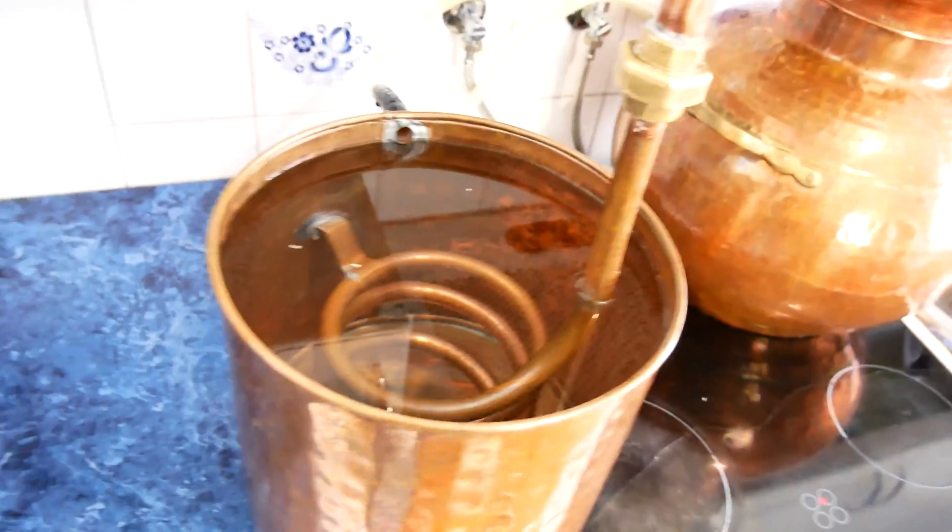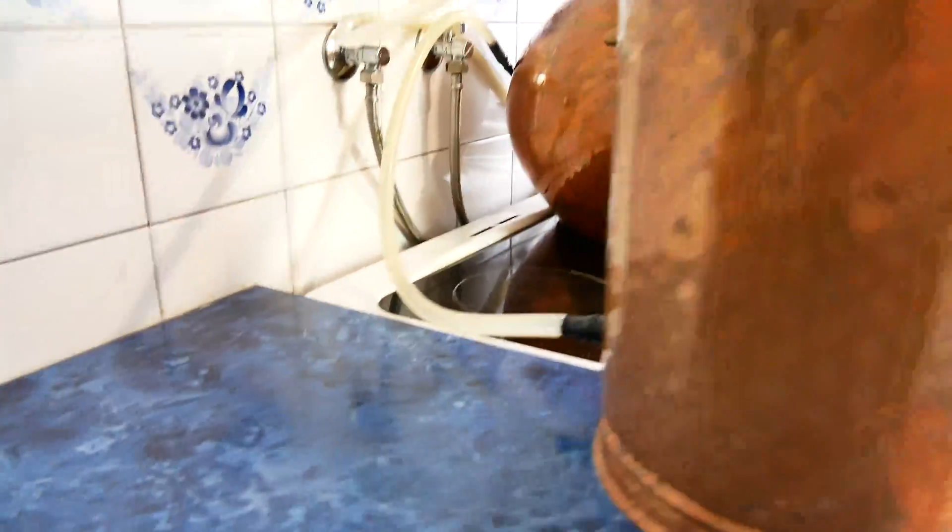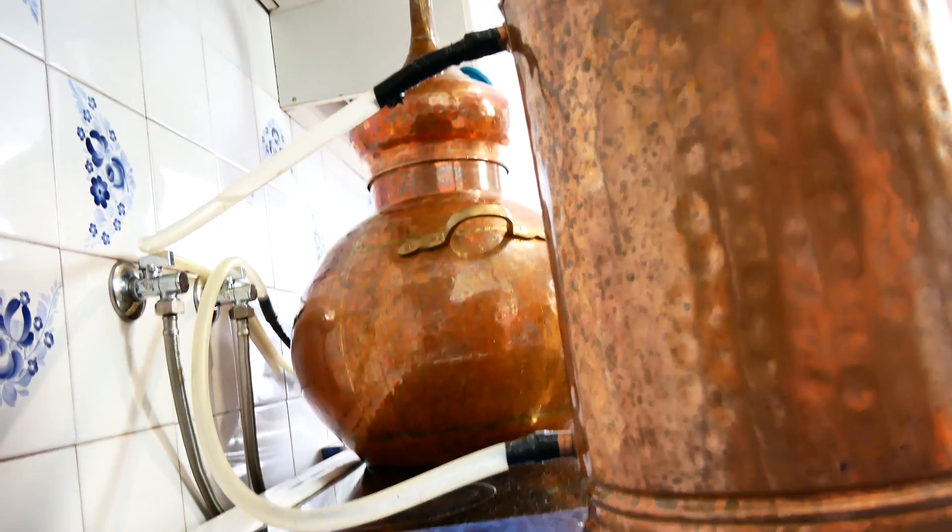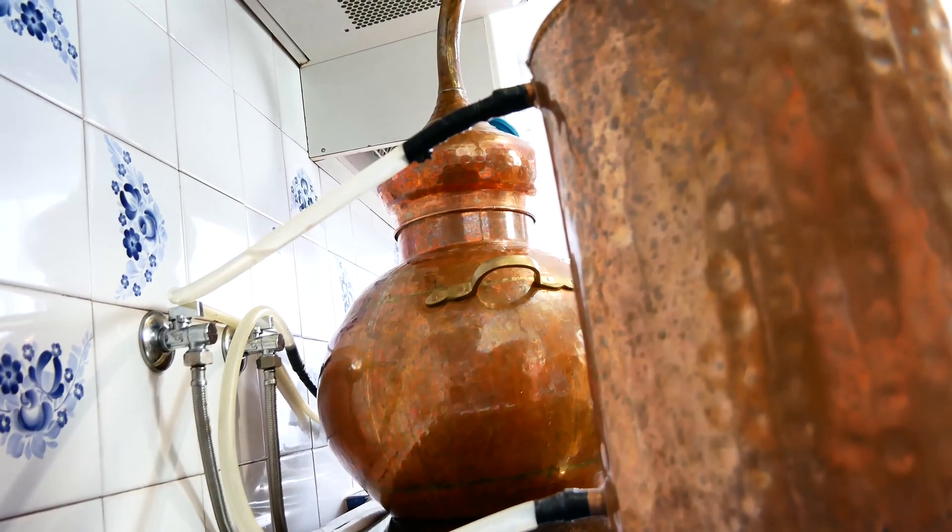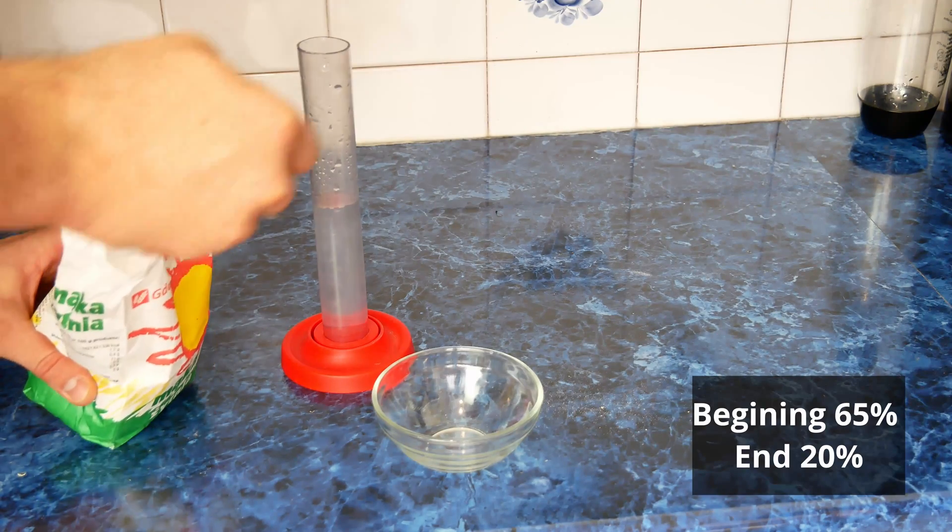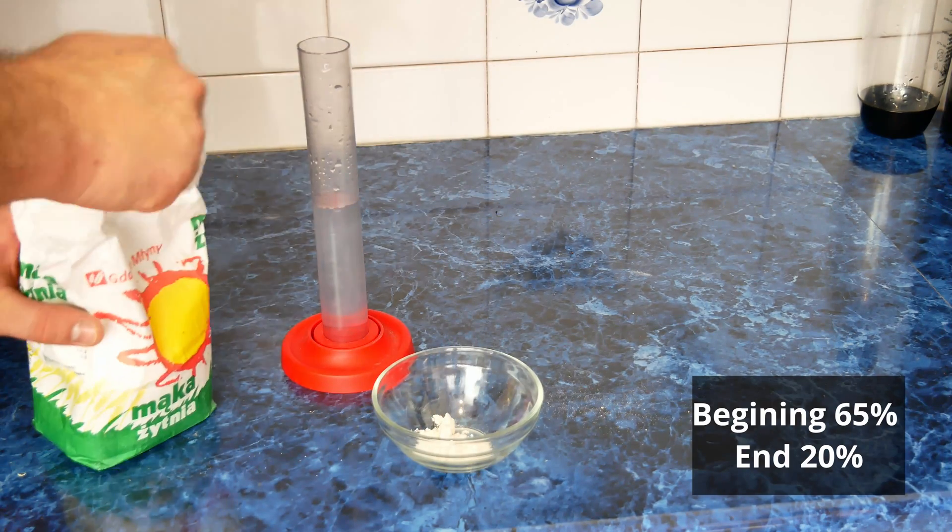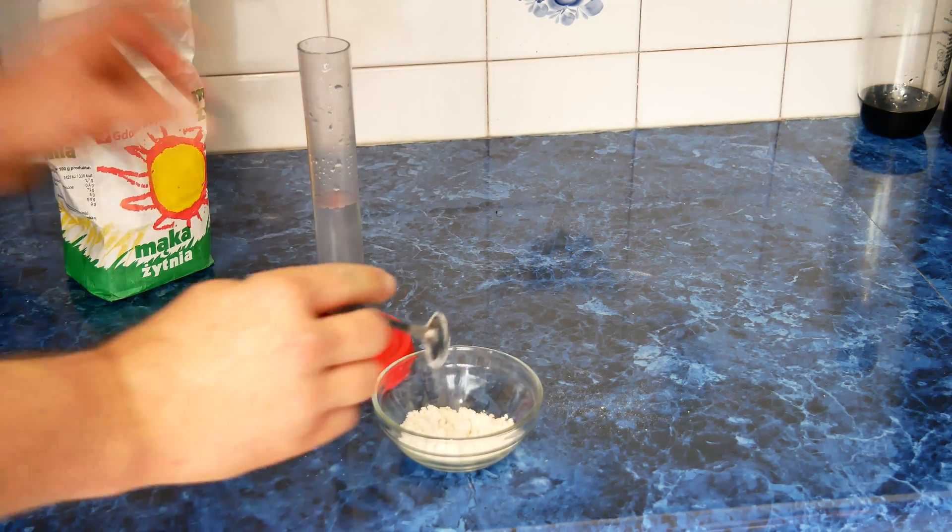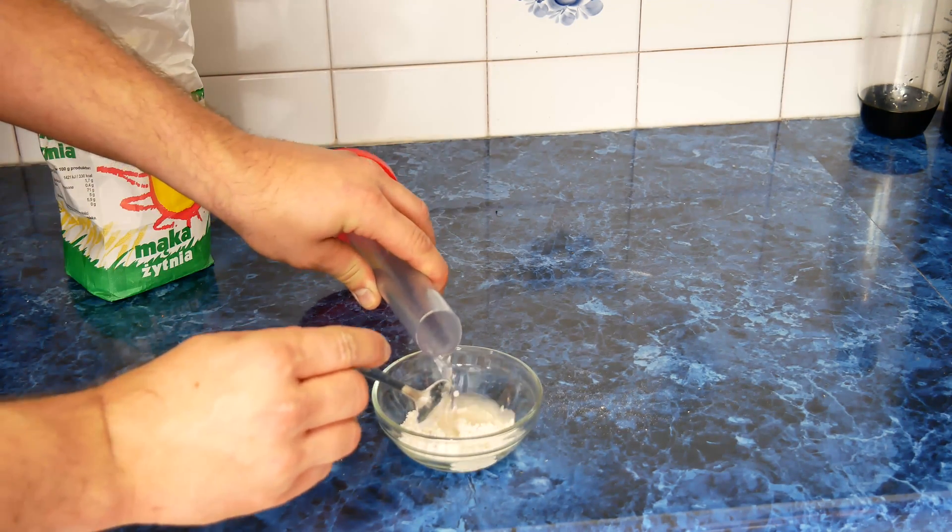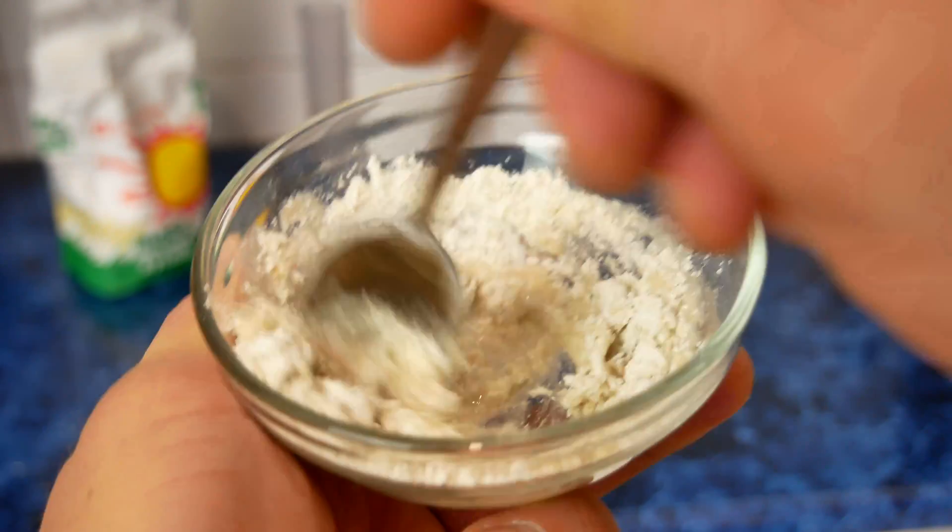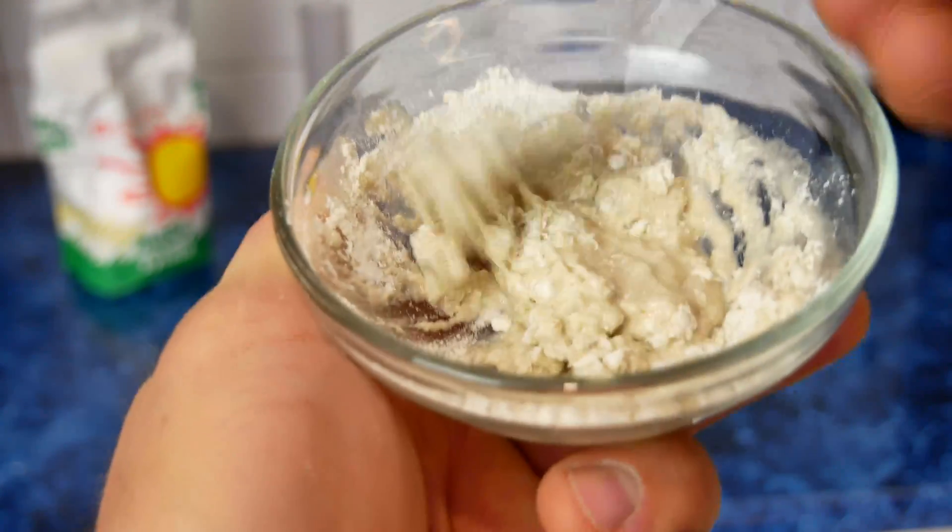When this temperature is reached we reduce the heating. We stabilize the temperature so that it stays at this level. During the entire distillation process it will gradually increase. At the beginning of the distillation we will receive alcohol with a capacity of about 130 proof while at the end it will have about 40 proof. This is because as time goes by alembic has less and less alcohol and with a gradual increase in temperature the amount of steam increase and lower the strength of alcohol.